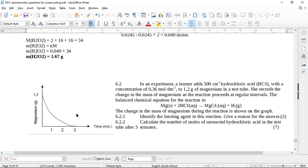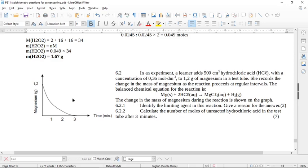Then let's have a look here at the second half of this question. This question is also using a graph here. This question says, in an experiment, a learner adds 500 cubic centimeters of hydrochloric acid with a concentration of 0.36 moles per cubic decimeter to 1.2 grams of magnesium in a test tube. She records the change in mass of the magnesium as the reaction proceeds at regular intervals. The balanced chemical equation for the reaction is magnesium plus hydrochloric acid goes to magnesium chloride plus hydrogen. This reaction is balanced, I checked. The change in the mass of magnesium during the reaction is shown on the graph. So here's my initial mass, 1.2 grams, and then as it's eaten away by the acid, it goes all the way down to zero. So if it goes all the way down to zero, it's all used up.